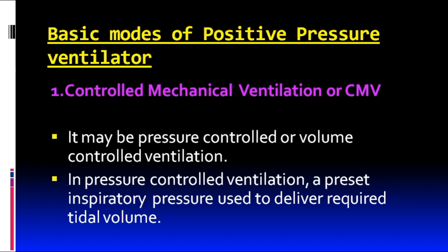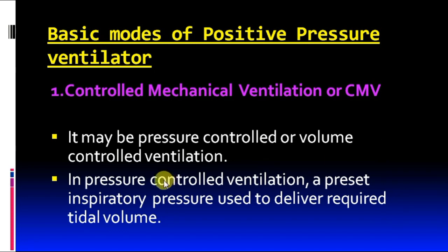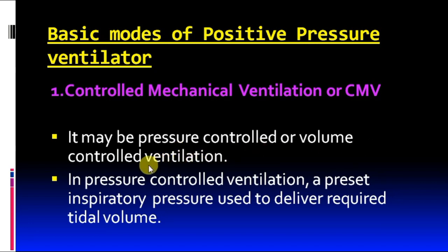The basic modes of positive pressure ventilators include controlled mechanical ventilation (CMV), which may be pressure-controlled or volume-controlled. In pressure-controlled ventilation, a preset inspiratory pressure is used to deliver the required tidal volume. The doctor first calculates the required tidal volume at 6 to 8 ml per kg of body weight, then sets the inspiratory pressure accordingly.